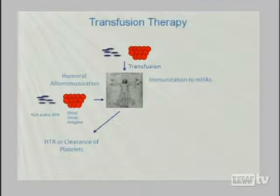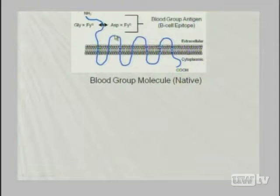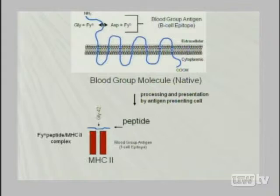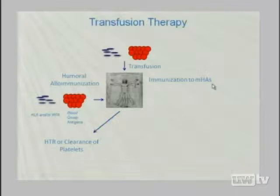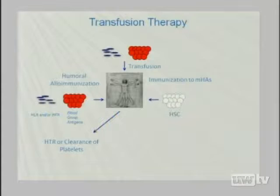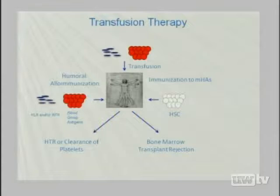There's another arm to be considered: immunization to minor antigens. There is an unfortunate overlapping of nomenclature here. In the immunohematology world, a minor antigen is Kell, Kidd, Duffy, etc., where an antibody would recognize it. But in the more basic immunology world, a minor antigen is not the B-cell epitope but the peptide containing the polymorphism presented in the MHC of the recipient — either class 2 or class 1. It is this definition of minor antigen that I'm going to be using for the rest of the talk.